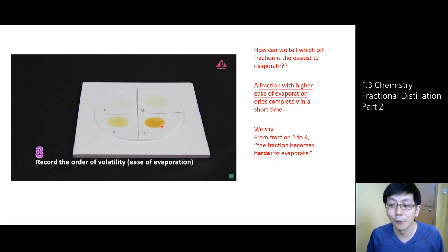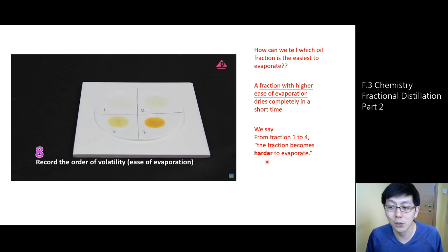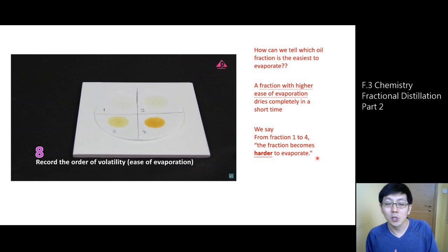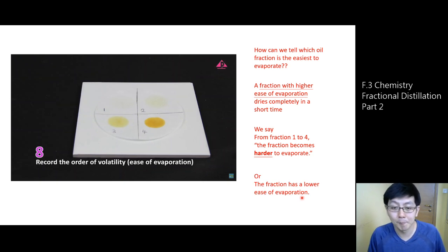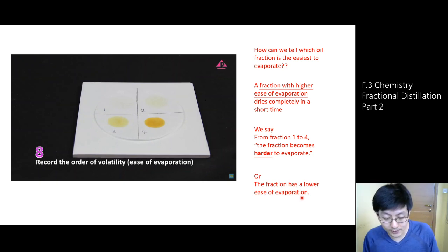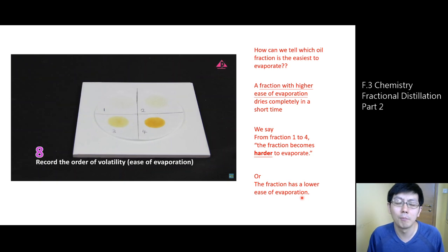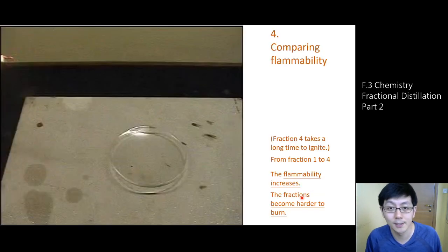From fraction 1 to fraction 4, the fraction becomes harder to evaporate. We can describe this as: the fraction has a lower ease of evaporation. This is the third property we compare for these oil fractions.